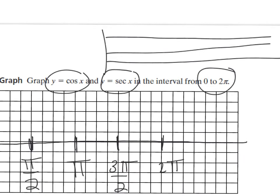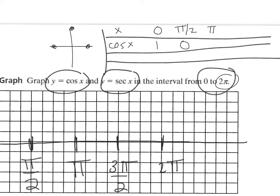The table has x and cosine of x. At x = 0, cosine is 1. At pi over 2 (90 degrees), cosine is 0. At pi, cosine is negative 1. At 3 pi over 2, cosine is 0. And at 2 pi, cosine is back to 1. Since secant is 1 over cosine, I take the reciprocal of each: 1/1 = 1, 1/0 = undefined, 1/(−1) = −1, 1/0 = undefined, and 1/1 = 1.